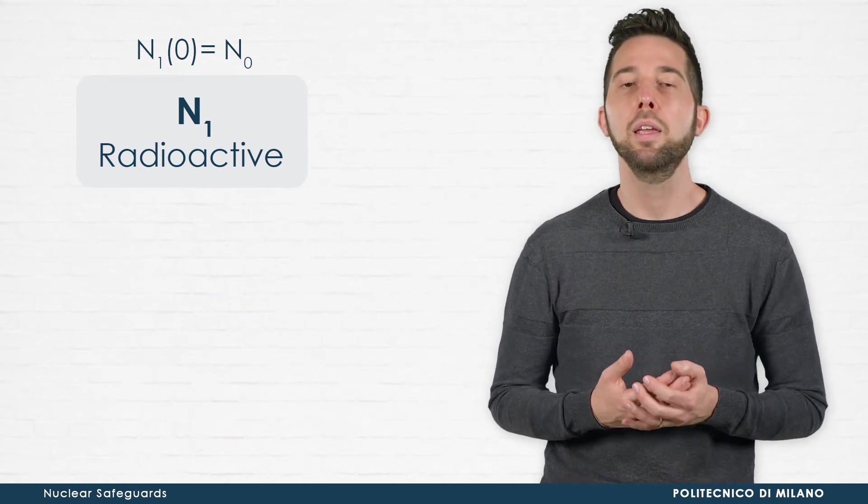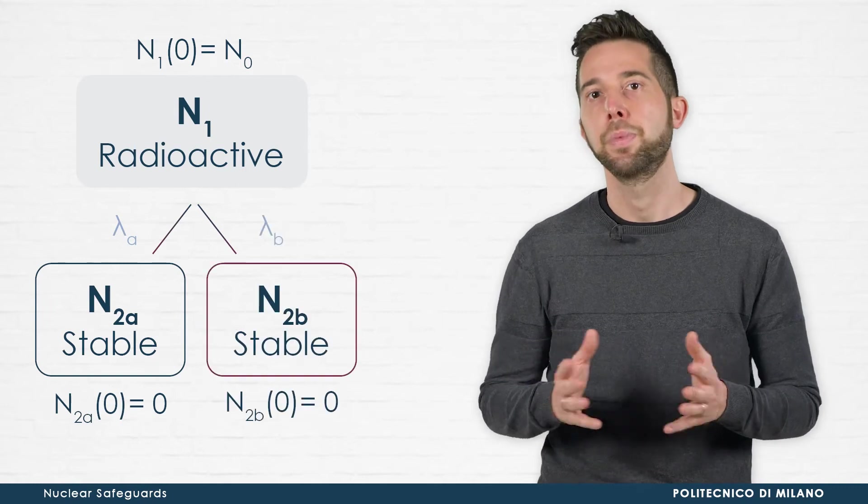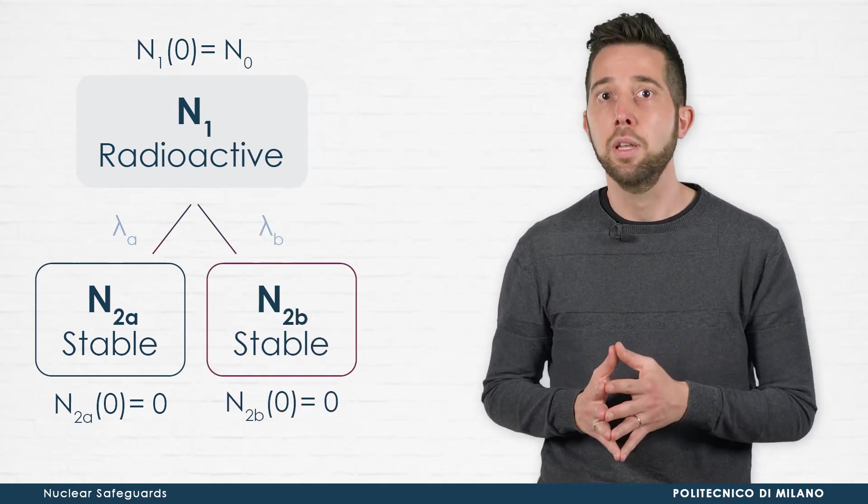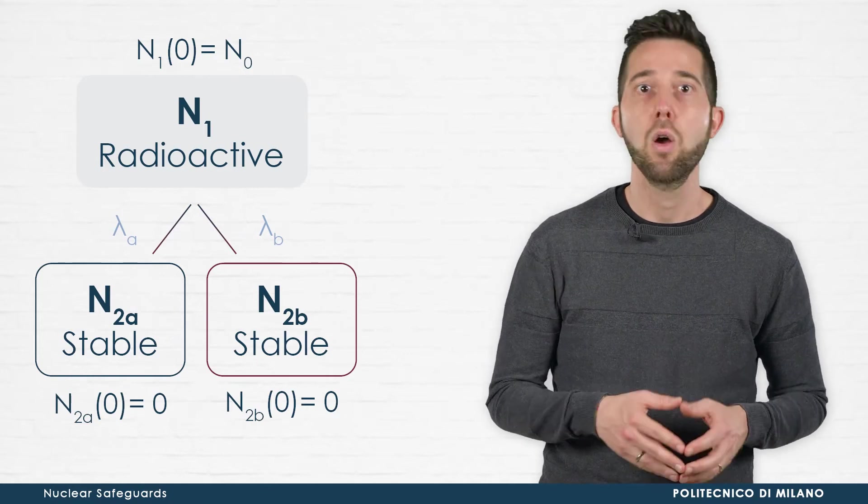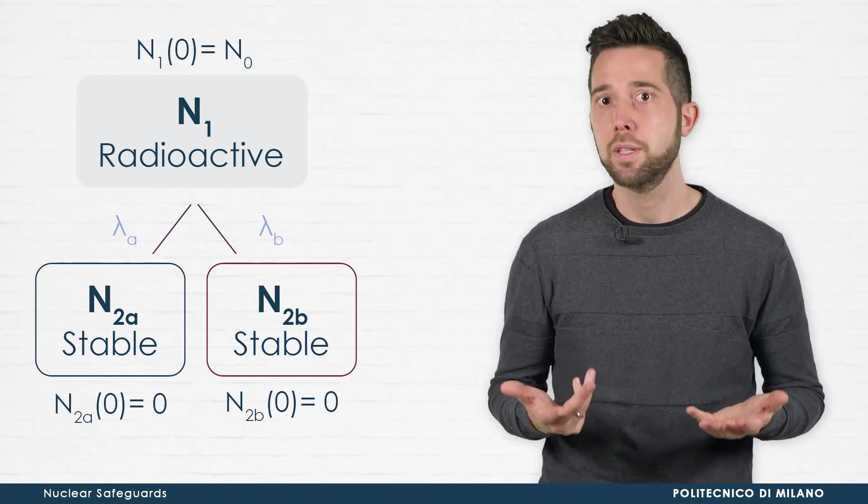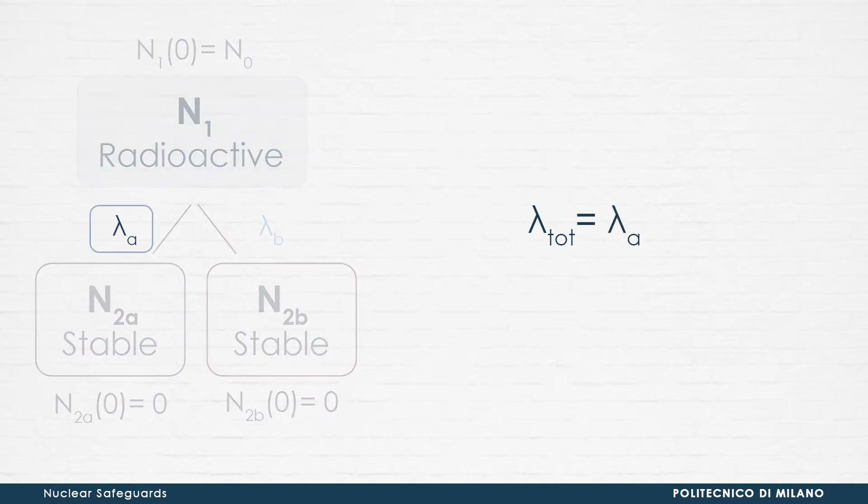suppose that type 1 nuclei can decay to daughter nuclei of type A and B. Conditions A and B can in general refer to different types of nuclei or to different conditions of nuclei of the same type. The total decay rate, lambda total,